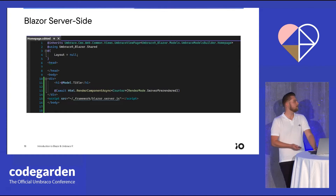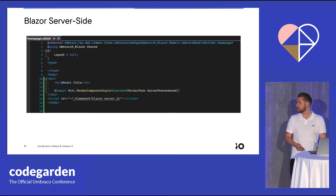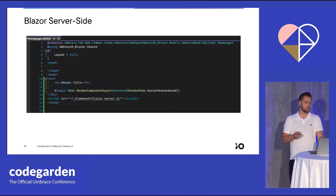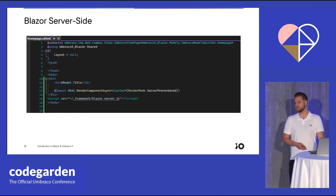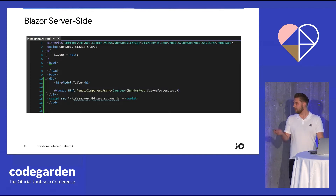Now let's say we want to render this specific component on one of our .cshtml templates — for example, our homepage. What you can see is a simple example of HTML markup with a head and a body tag, and within our body tag we call the RenderComponentAsync method. Within that, we specify the component we wish to render and the fact that we want to render the component server-side — specifically server pre-rendered — because our client does not contain WebAssembly. Lastly, we need to make sure our page has access to the blazor.server.js by adding the script tag, and then we're pretty much good to go.